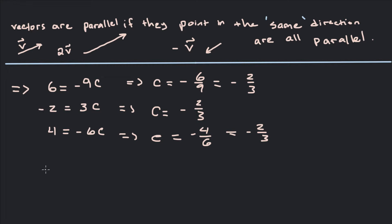So yes the vectors are parallel and C is equal to negative 2 thirds. So if we didn't get the same C value for each one then that would tell us that the vectors are not parallel.